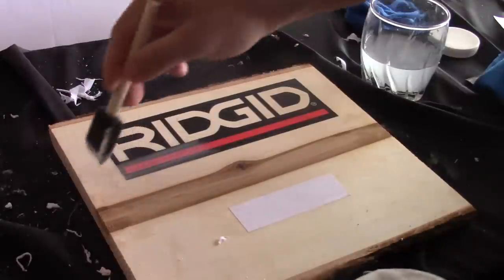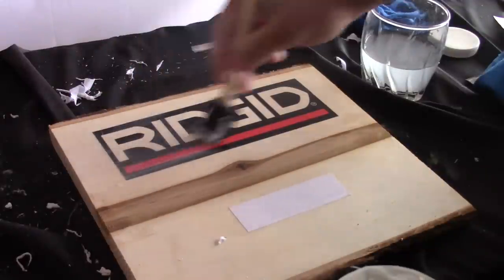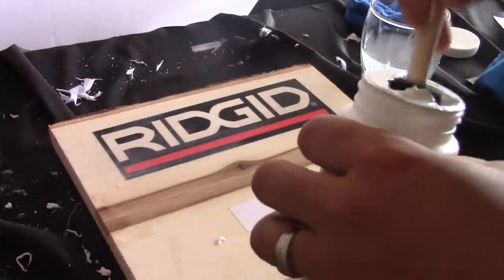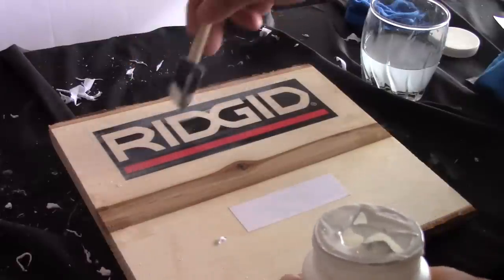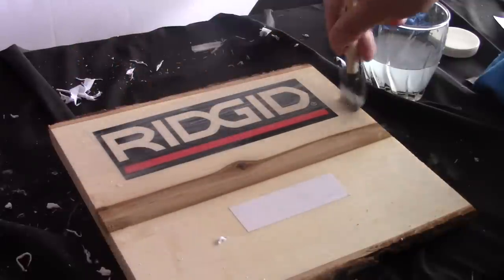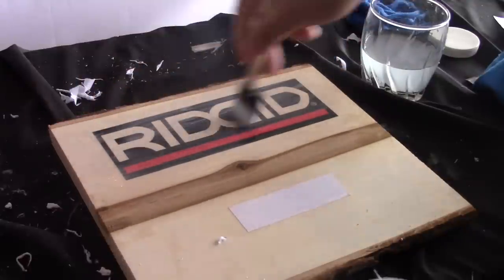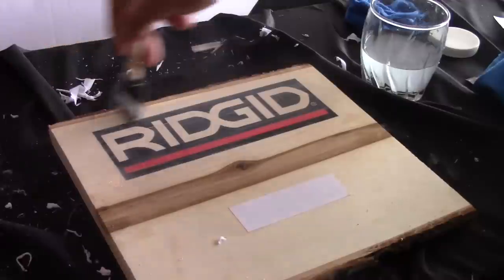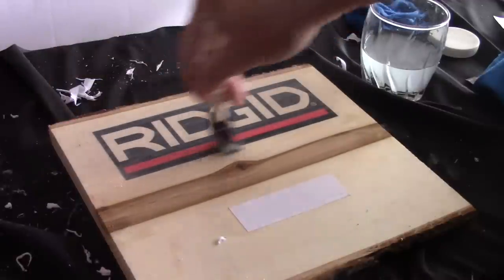I'm just going to take some of this Mod Podge here and I'm going to brush it on with a real light fine coat. It doesn't have to be too heavy, and once this dries it will be nice and protected. So if water gets on there, you know, if you accidentally scratch it, it shouldn't come off. It'll stay on there nice and solid, so you have to make sure that you seal it.